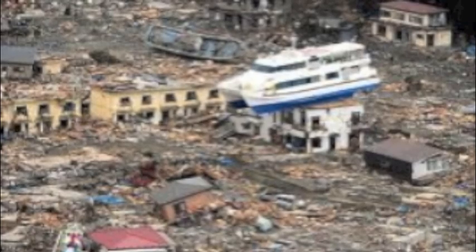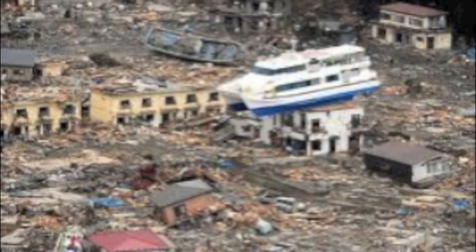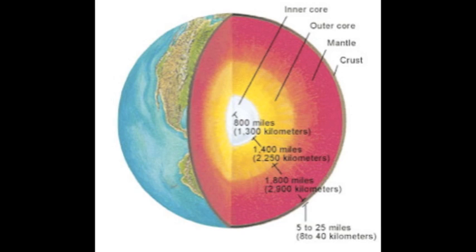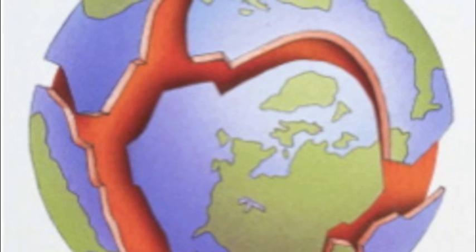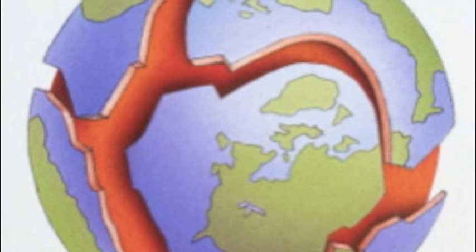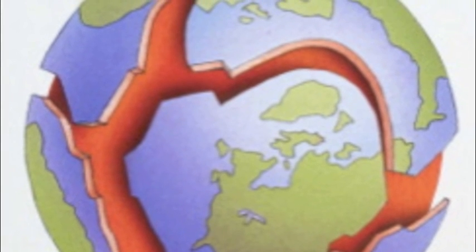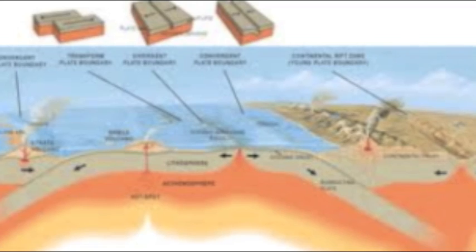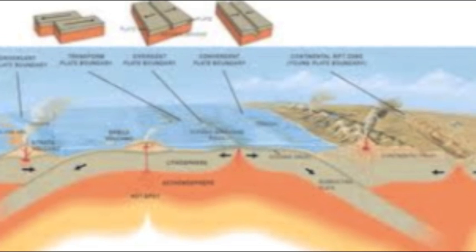Scientists started investigating the cause of this disaster. The cause goes back to the geology of the earth. Earth has four layers. Earth's outer layer or crust is broken into pieces called tectonic plates, which are constantly moving towards, away from, or past each other. The tectonic plates comprise the bottom of the crust and the top of the earth's mantle.